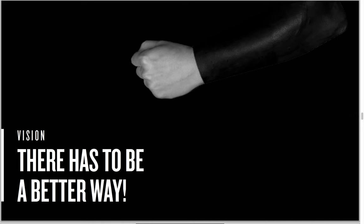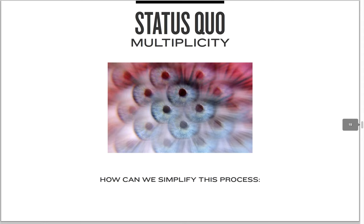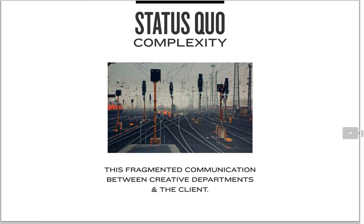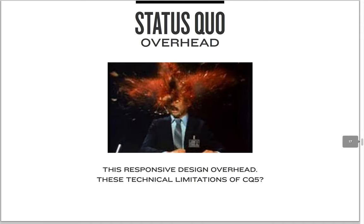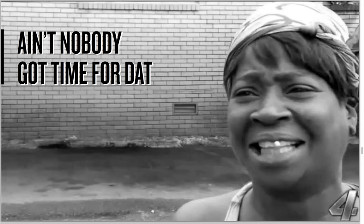Jimmy, the creative director on Jordan at the time, said there has to be a better way. He asked us if we had any ideas — how can we really simplify this process internally with our own teams and with the client? How can we take that complexity and simplify it? How can we take this overhead of responsive design and enable designers so that they can create these responsive designs only once? Because in the end, we really want to create the best experiences and products for our clients, and changing very simple things in a design or on the web is just not the way to do that.